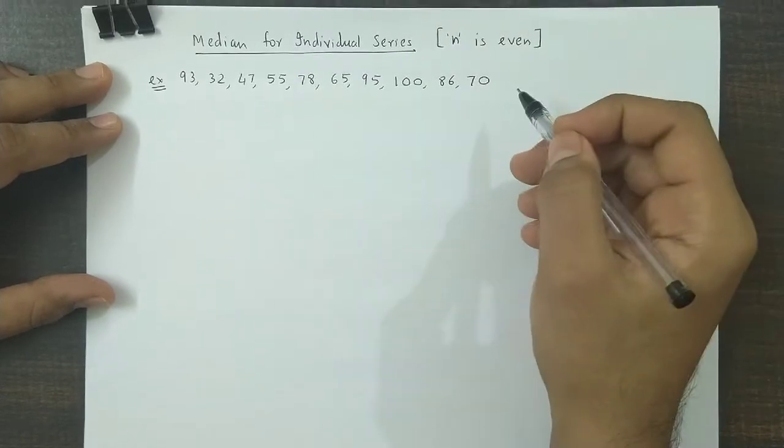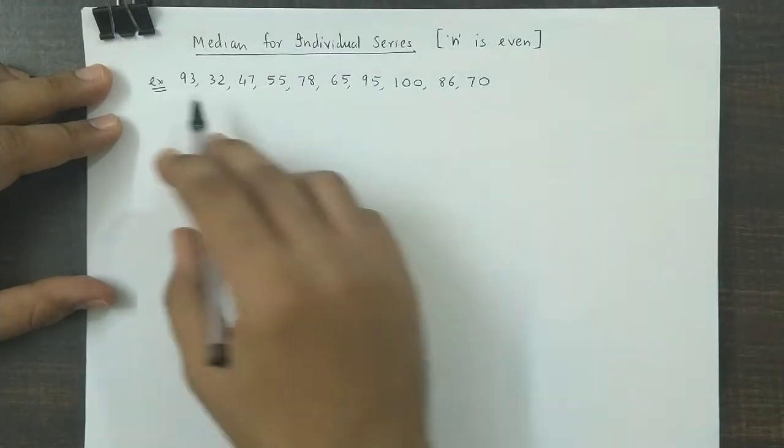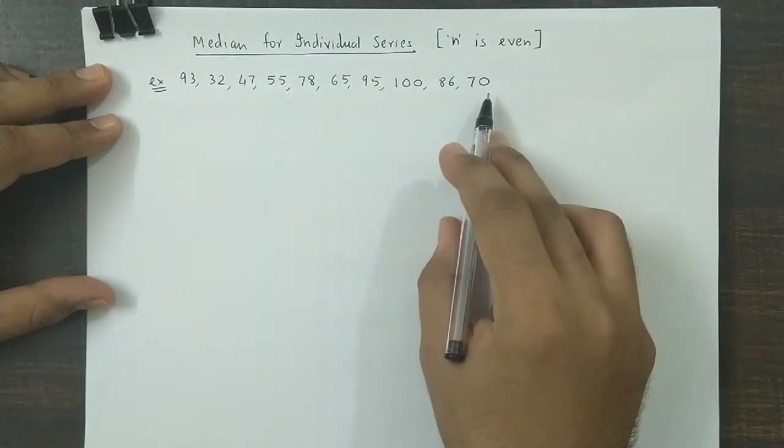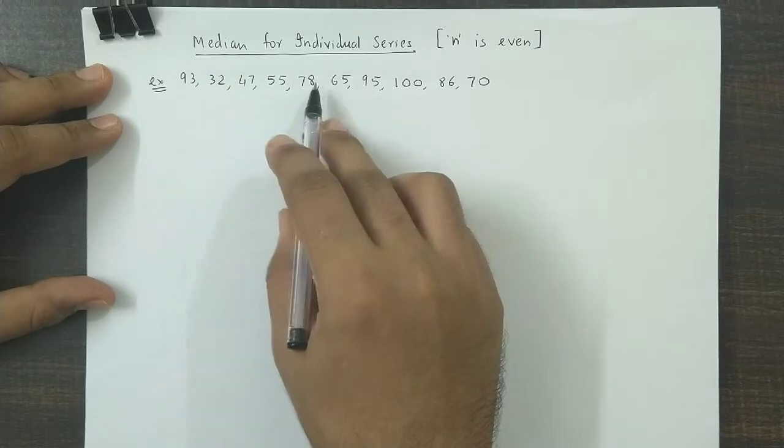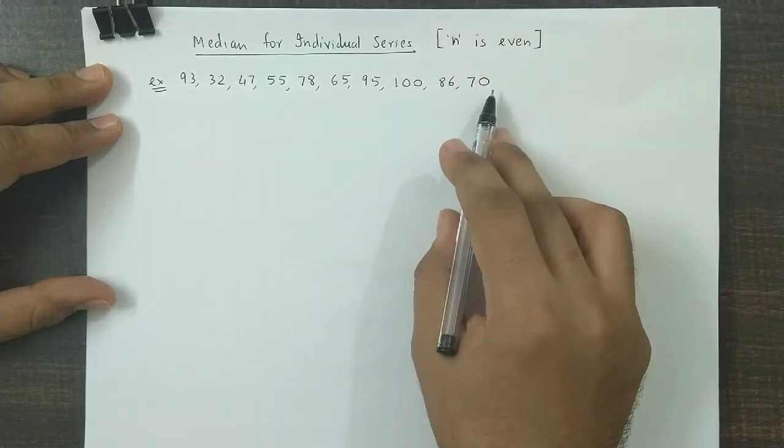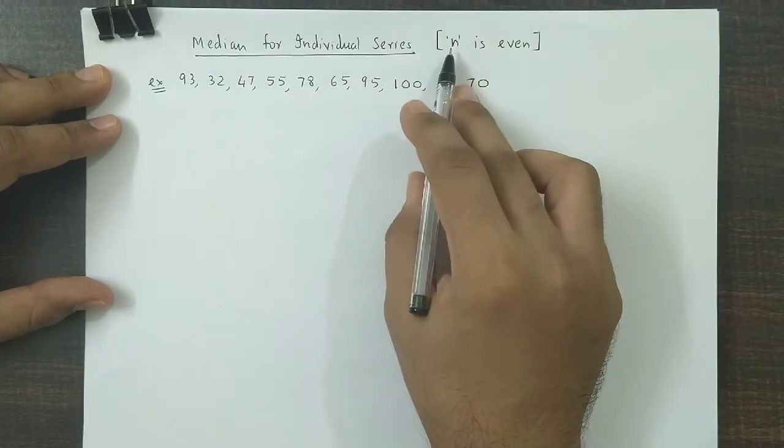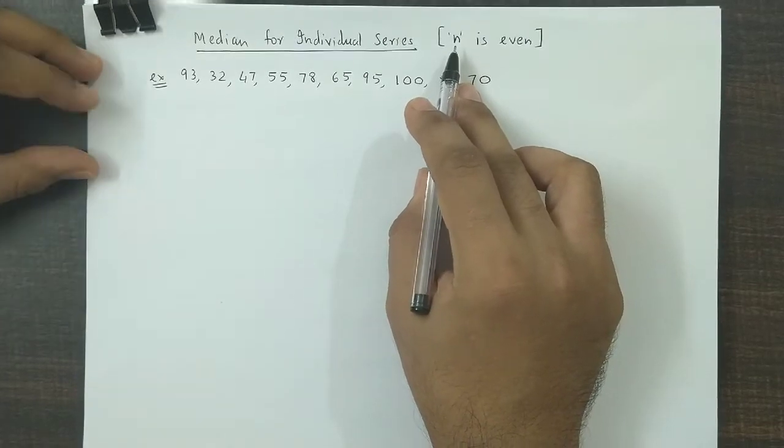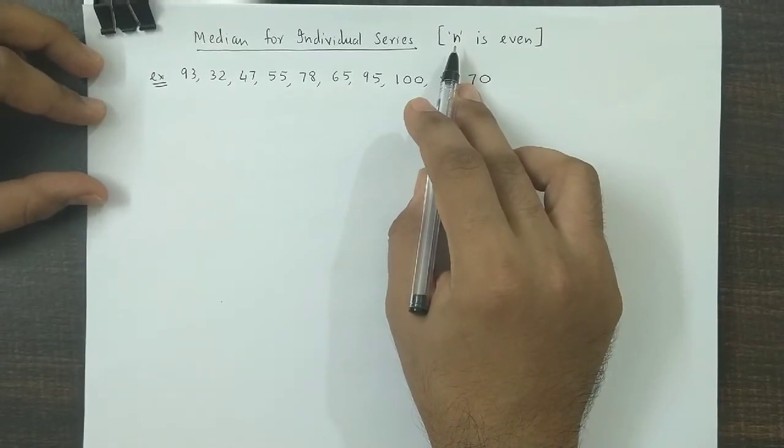Now let us study this with an example. We have a data set with one, two, three, four, five, six, seven, eight, nine, ten—ten observations. That is, n is even. Now in order to obtain the median, we need to arrange the data in ascending or descending order.